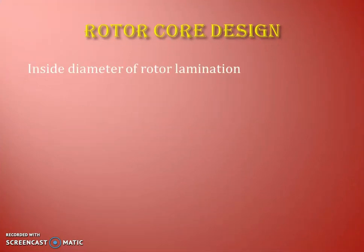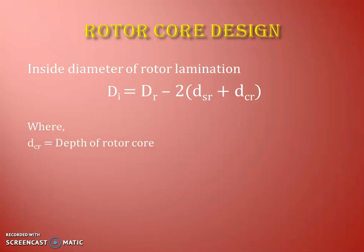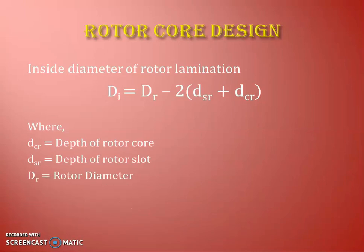To complete the rotor core design, once depth of the rotor core is available, we calculate the inside diameter of the rotor lamination, which is the shaft diameter. Inside diameter di equals rotor diameter dr minus 2 times (dsr — depth of rotor slot) minus 2 times (dcr — depth of rotor core). Based on this equation, we can easily calculate the inside diameter of the rotor lamination. This way we have completed the rotor design for slip ring type motor.